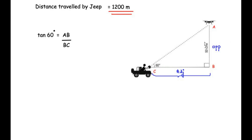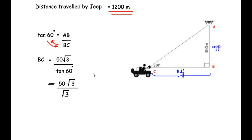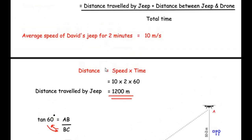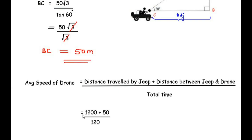Tan(60°) = AB / BC. Solving for BC: BC = AB / tan(60°) = 50√3 / √3. The √3 cancels, giving BC = 50 meters. So the distance between the jeep and the drone is 50 meters.